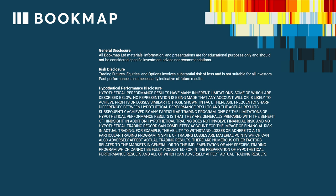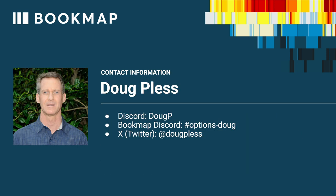Past performance is not necessarily indicative of future results. Here's my contact information. The best way to get in touch with me is through Discord. My name on Discord is Doug P. Also in Bookmap Discord, there's an options-doug chat channel. That's a great place to post questions, comments, and content related to the topics of my presentation.